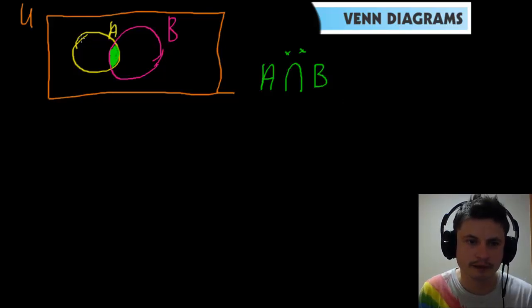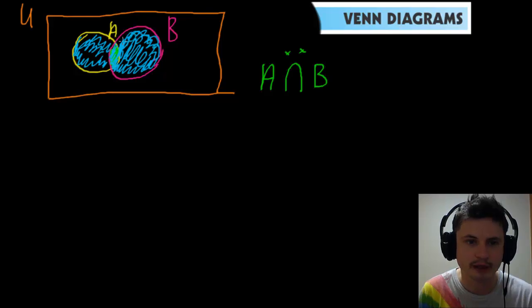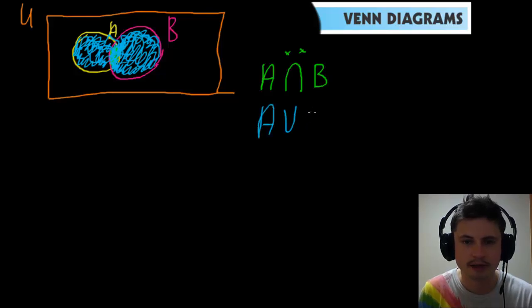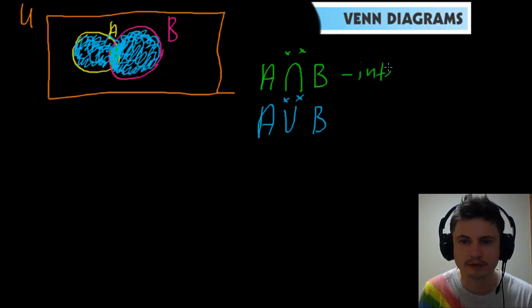Now I'm going to use blue to represent the union. I'm coloring everything that is considered to be the union of two sets, which actually includes the intersection. So all the blue stuff represents A union B. So the green one was intersection and the blue one was the union.